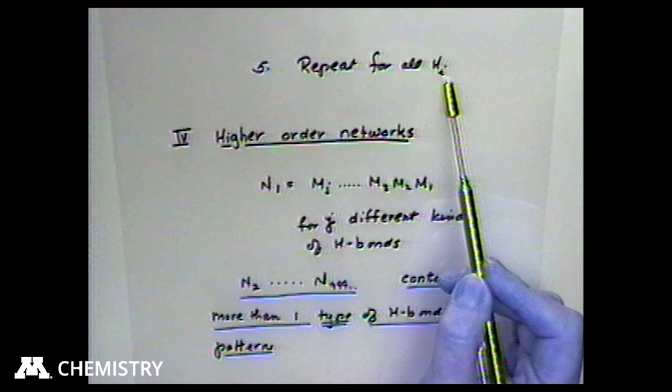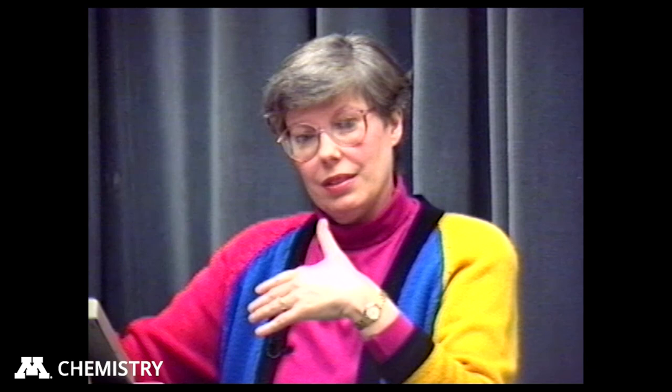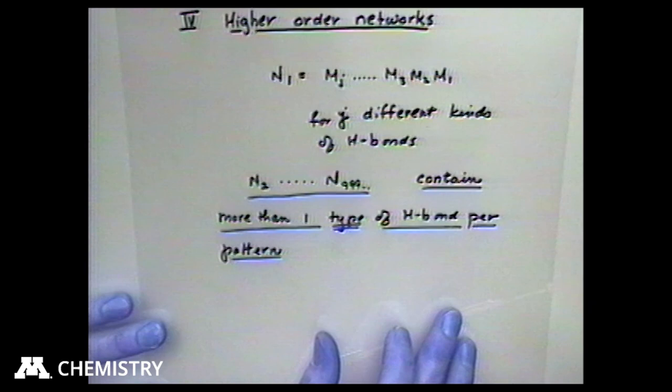For people who want to actually do this, a very tricky point is that we're talking about different kinds of hydrogen bonds, not different kinds of hydrogens — because one hydrogen can enter into two, three, or four different hydrogen bonds. The motif and graph set idea is based on a type of hydrogen bond, not a type of hydrogen.